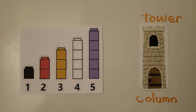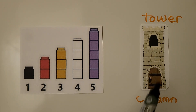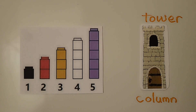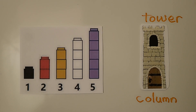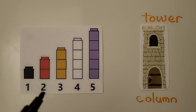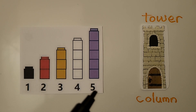Here we have some columns of cubes. Columns go up and down like a tower, and each column has a different number of cubes. The numbers are in counting order with the shortest one first: one, two, three, four, five.